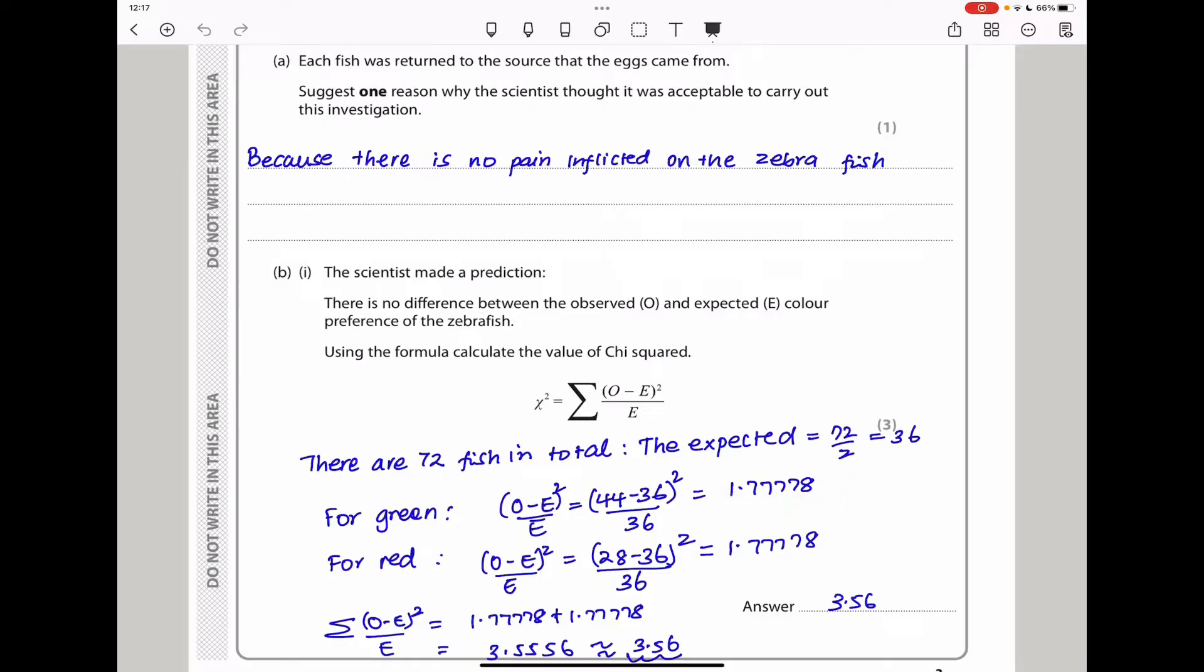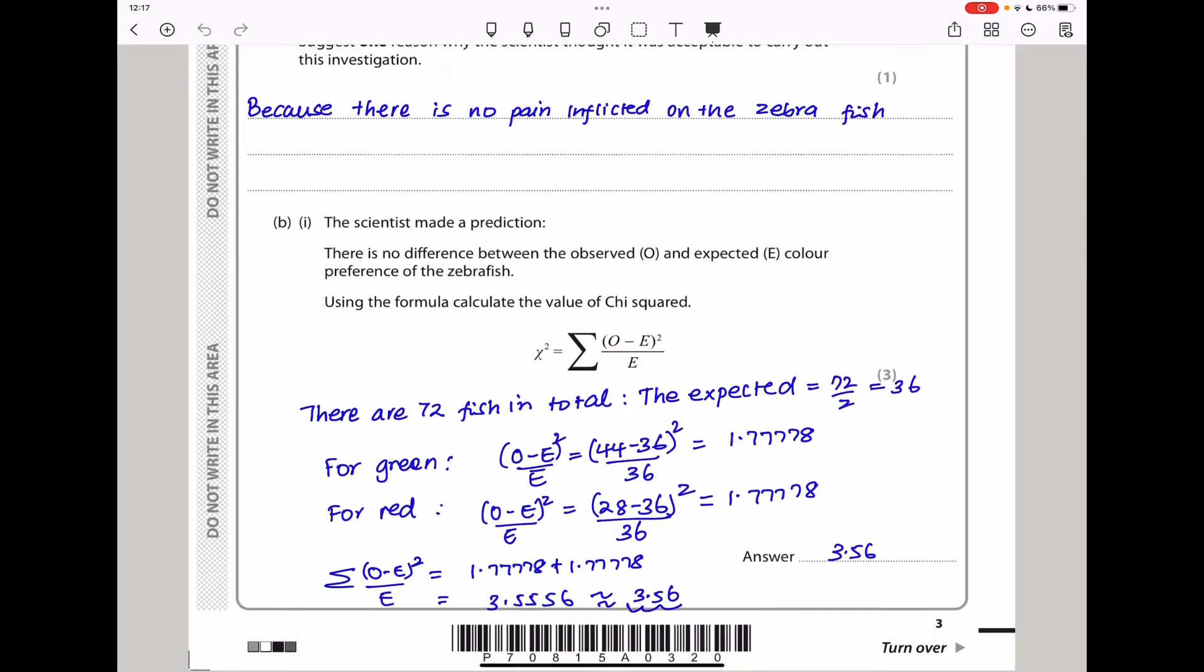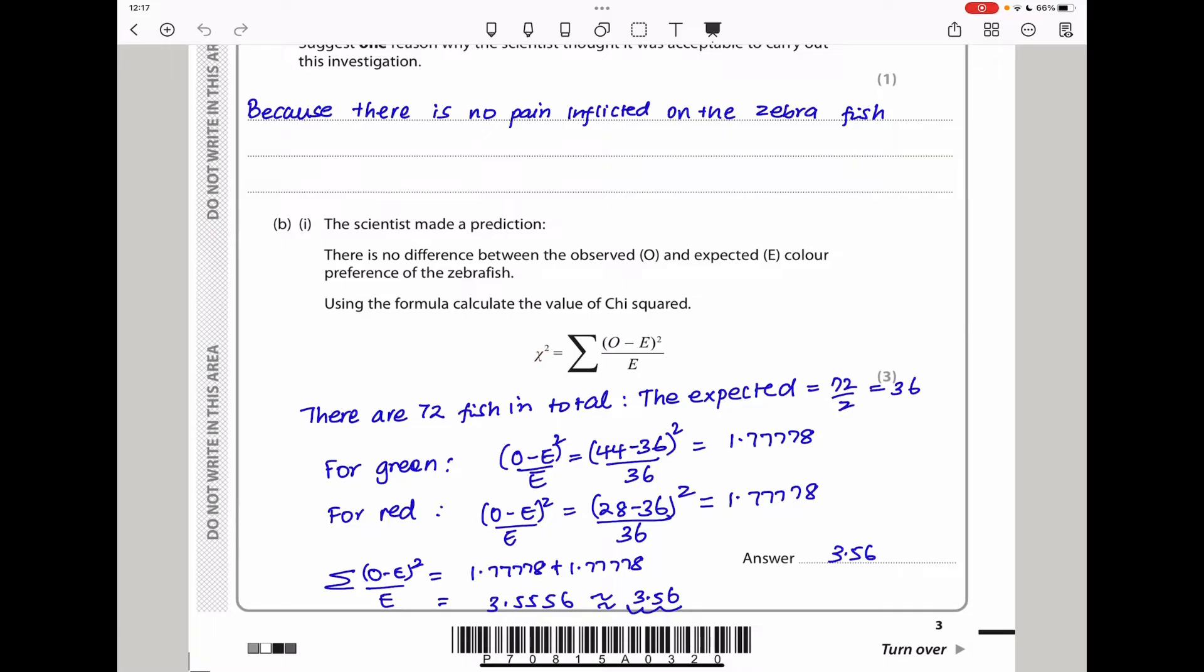Then for red, also 28 minus 36 divided by 36 gave me the same value. I had to add everything because chi squared is the summation of that and that. When I added them together, I got 3.5556, which I rounded off to 3.56, and therefore this is supposed to be my answer.